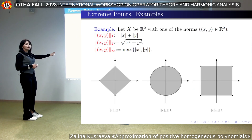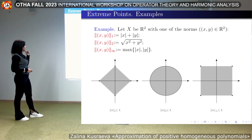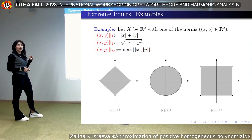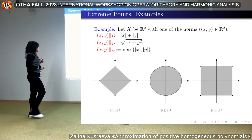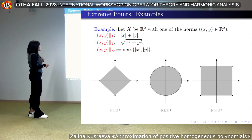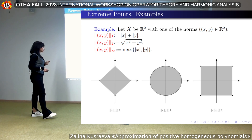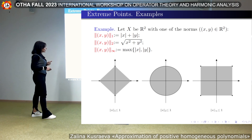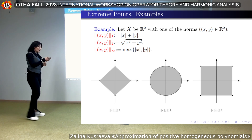Here is a visualization of extreme points. In two-dimensional LP space with three norms — L1, L2, L-infinity — we can see the unit balls. In L1 or L-infinity, the extreme points are the vertices of the rhombus and square. In L2 space, the unit ball is a circle and the extreme points are the entire boundary of the circle.